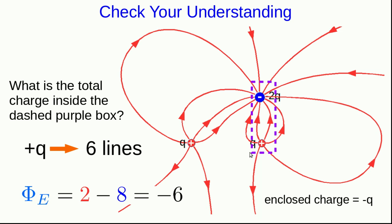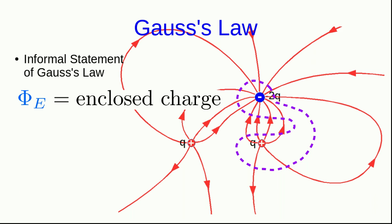So you can try a surface like this, or you could do a weird-shaped surface like this. And although the number of lines out and in will differ for these different surfaces, you're always going to come up with a total flux of negative six, no matter what surface you draw, as long as it encloses these two charges.